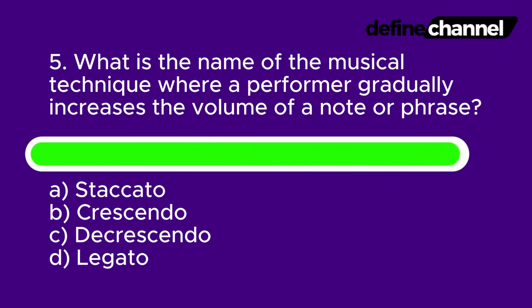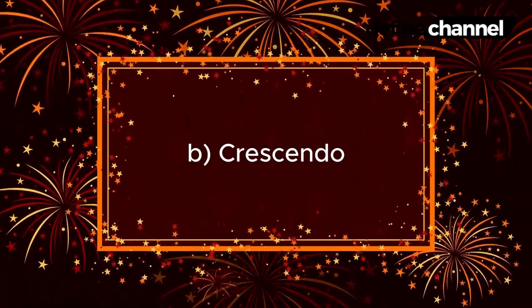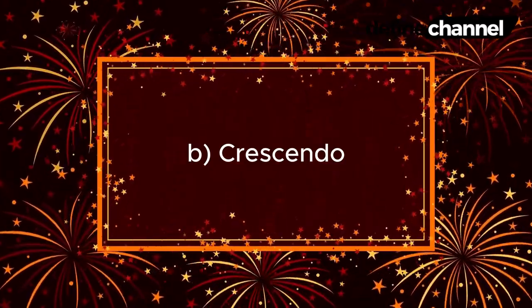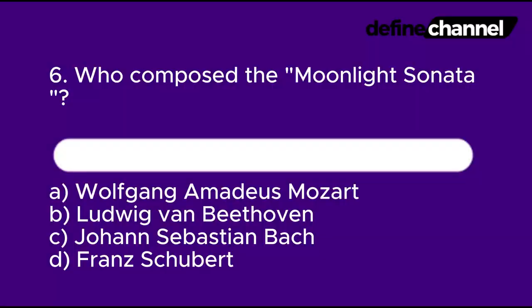Question 6: Who composed the Moonlight Sonata? A. Wolfgang Amadeus Mozart. B. Ludwig van Beethoven. C. Johann Sebastian Bach. D. Franz Schubert. Which do you think is the correct answer?